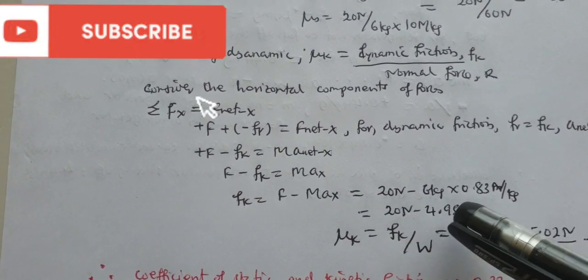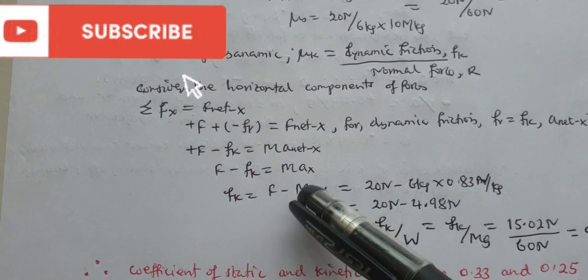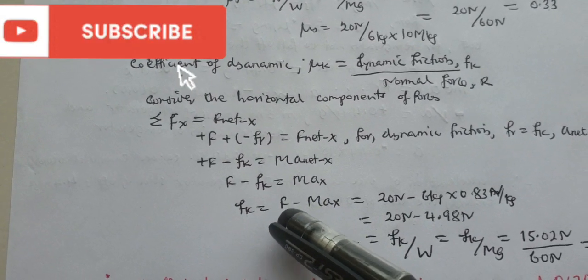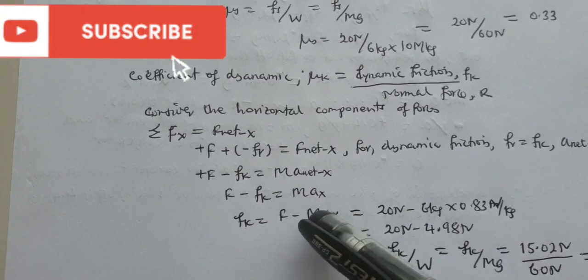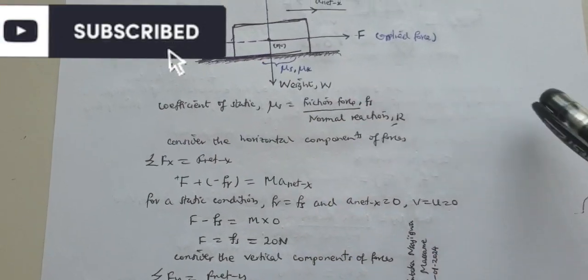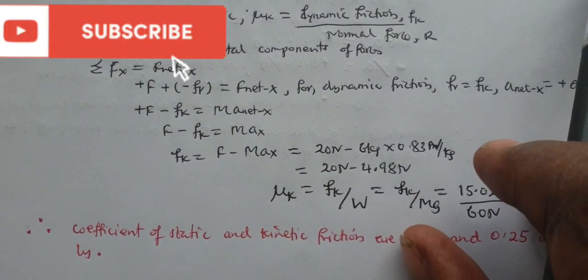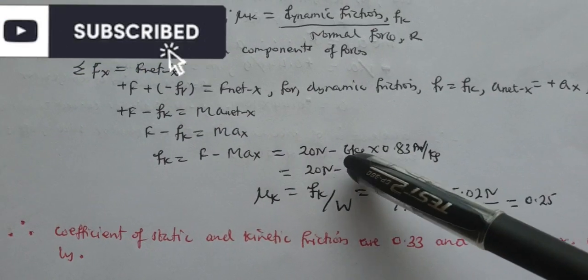Let us find the kinetic friction force by making it the subject: F_k equals F minus mass times acceleration due to net acceleration along positive x direction from the center of the frame of reference.